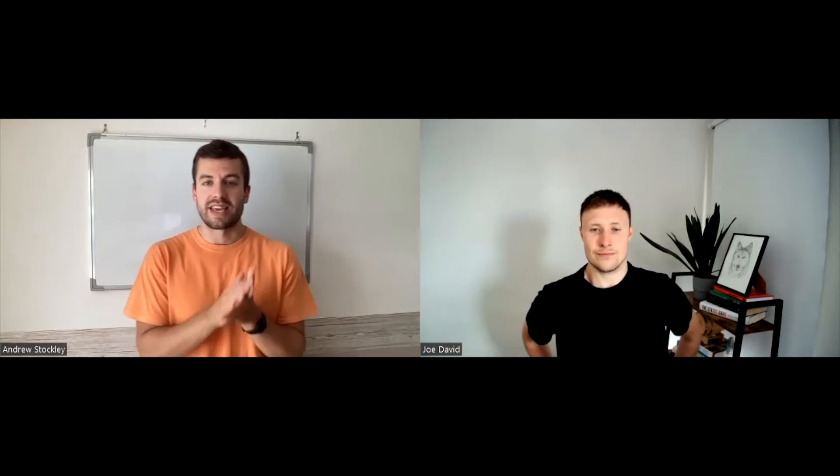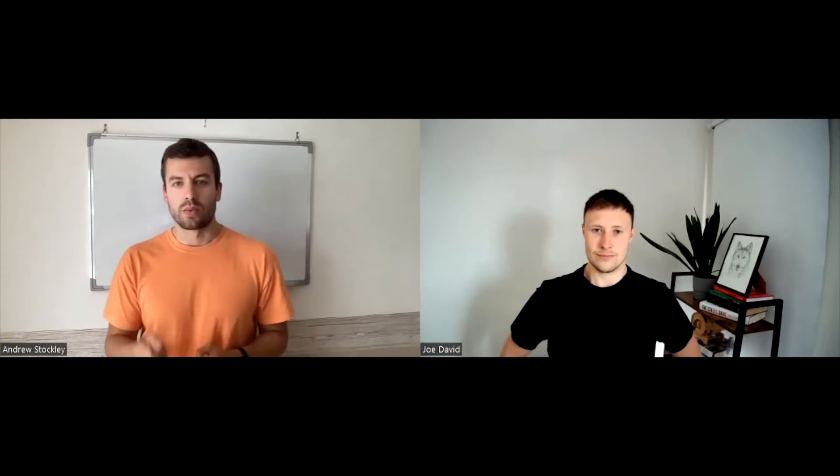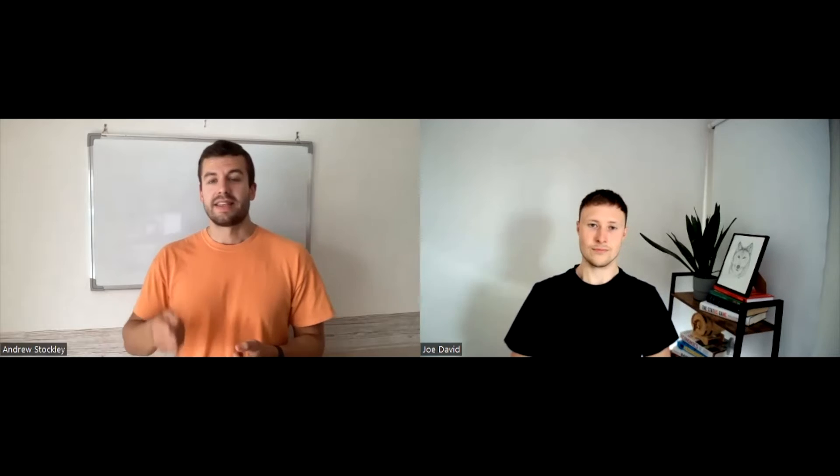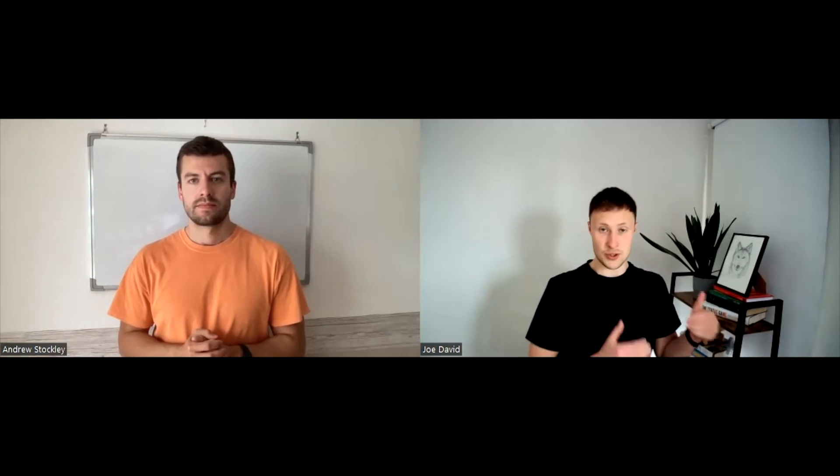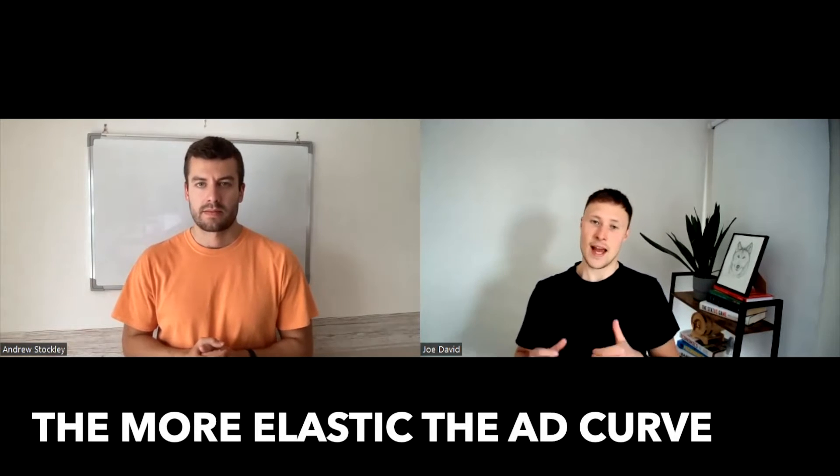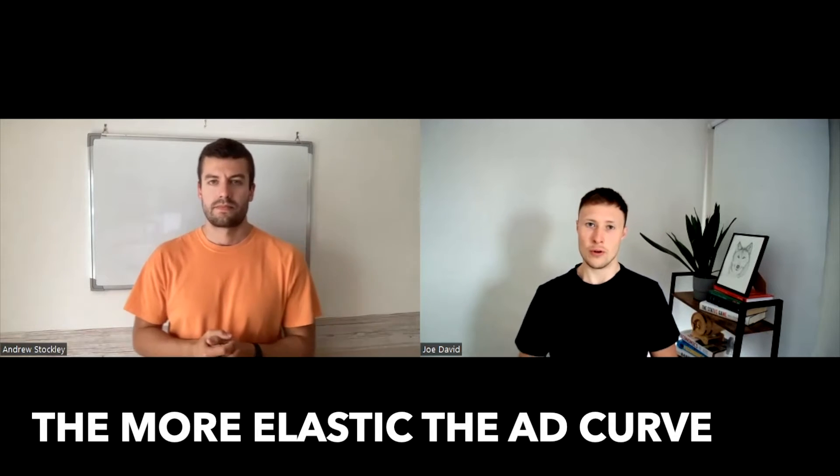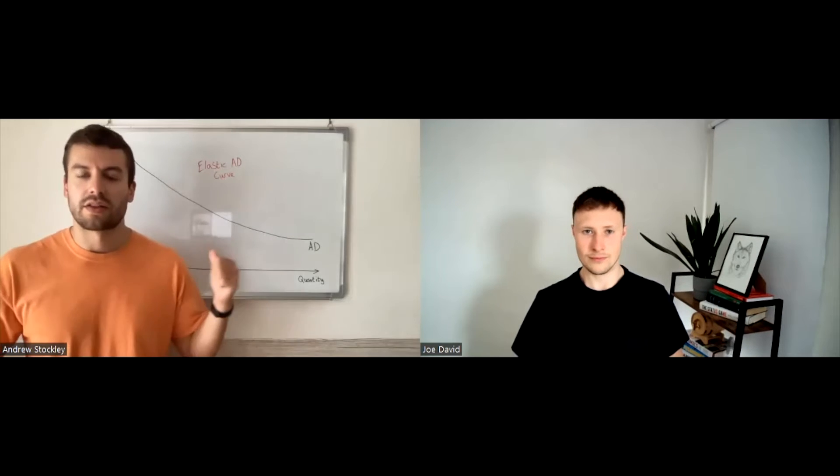So at this point, we know that the aggregate demand curve, the AD curve, is downward sloping, meaning the income and substitution effects of a rise in the general price level will cause the aggregate demand for goods and services to fall. But there is something to know. So the bigger the income and substitution effect, the more elastic the AD curve will become, which will look something like this on the graph.